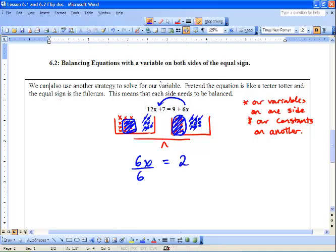And we're going to divide by 6, divide by 6. And we get x to equal 2 over 6, which equals 1 over 3.